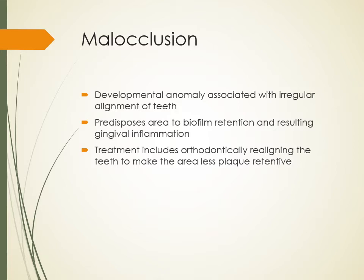Malocclusion is a developmental anomaly associated with irregular alignment of the teeth. It predisposes areas to plaque biofilm retention and resulting gingival inflammation. Treatment is usually orthodontics to realign the teeth and make those areas less plaque-retentive. When there is a lot of crowding around the lower anteriors and one tooth is set behind the others, brushing normally won't clean that tooth unless you specifically go back and brush it separately — which most patients don't do.